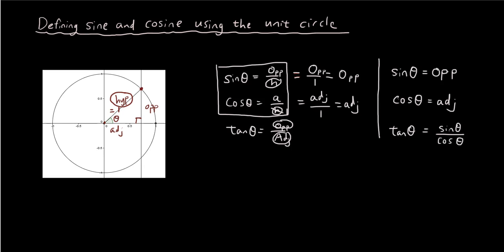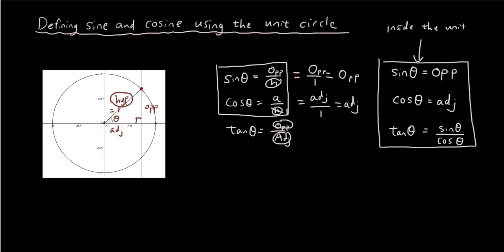So these are our new definitions of sin θ and cos θ inside the unit circle — specifically for a right angle triangle inside the unit circle.